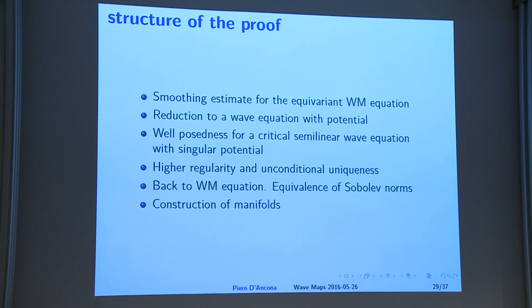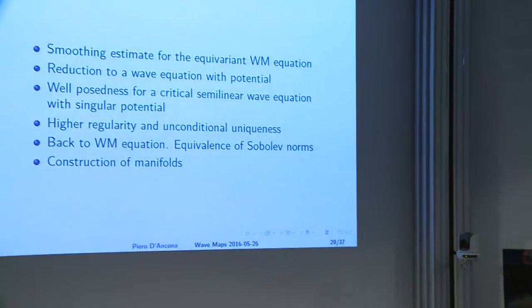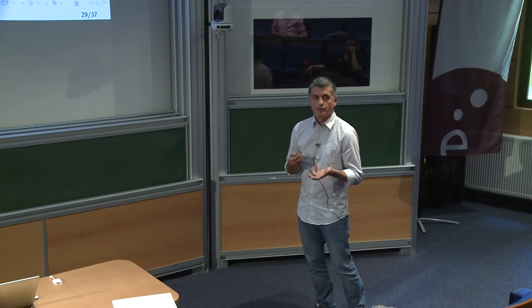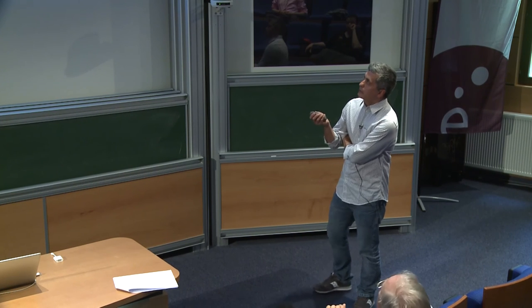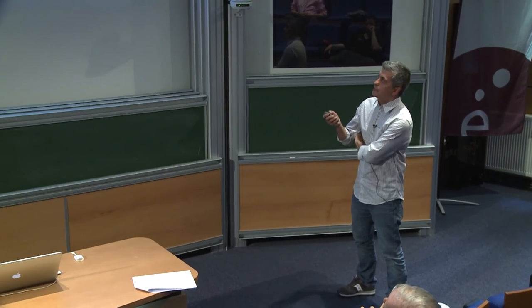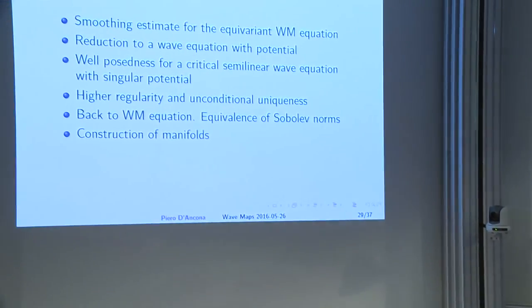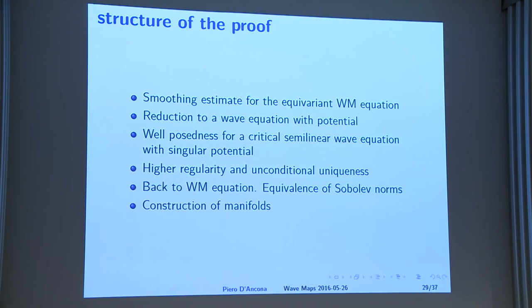Let me describe how it works. The equation is just a radial wave equation with some variable coefficients, so it's not too difficult to reduce to known techniques. Our approach is: the first step is proving smoothing estimates directly on the manifold. This is a well-known way to prove Strichartz estimates. We first prove smoothing estimates by multiplier techniques, then change coordinates to reduce the equation to a wave equation with a singular potential.